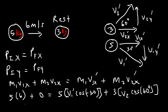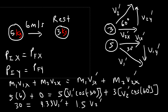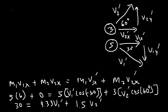So 5 times 6 is 30. Then 5 times cosine of negative 30 degrees gives 4.33, so that term is 4.33·v1'. And 3 times cosine 60 gives 1.5, so that term is 1.5·v2'. Our first equation is: 4.33·v1' + 1.5·v2' = 30.